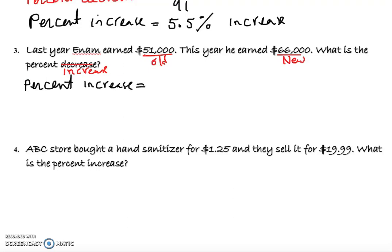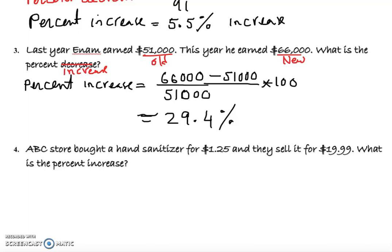Percent increase equals 66,000 minus the old one, which is 51,000, over 51,000 times 100. If you do this math, if you use a calculator, you just take the difference and you divide and then multiply. You remember the order of operations. So it should give you 29.4%. If you need to round to any decimal, it should be approximated. So what do you write here? 29.4% increase. That would be our answer.